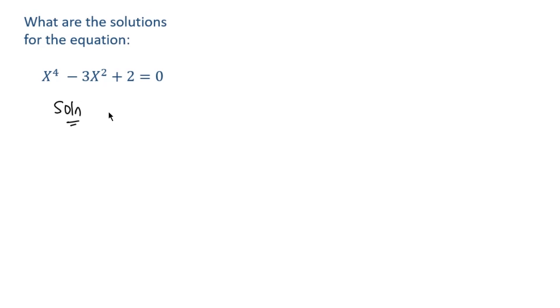What are the solutions for this equation? We have x to the power of 4 minus 3x squared plus 2 equals 0. One way we can do this is substitution. So this is what we're going to do.